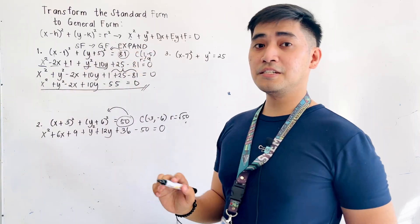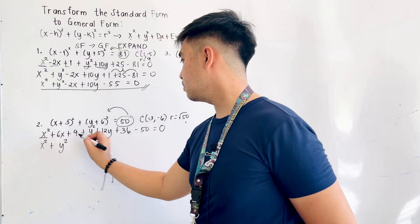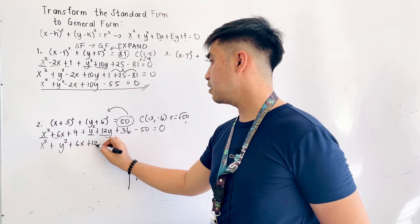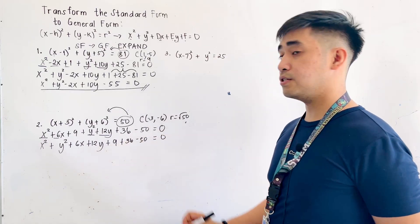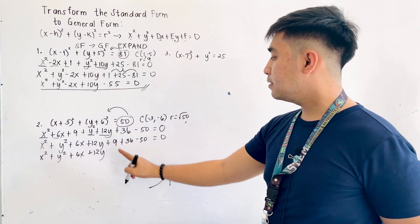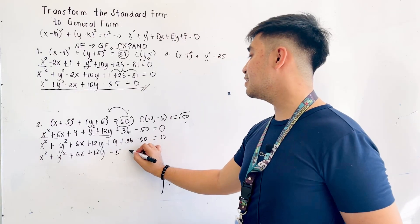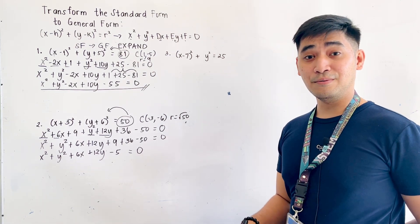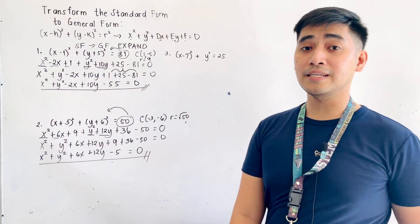Assembling the general form: x squared plus y squared plus dx plus ey plus f equals zero. We have x squared plus y squared, then dx is plus 6x, then ey is plus 12y, and the constants are plus nine plus thirty-six minus fifty equals zero. Nine plus thirty-six is forty-five, and forty-five minus fifty gives negative five. So the final answer is x squared plus y squared plus 6x plus 12y minus 5 equals zero.